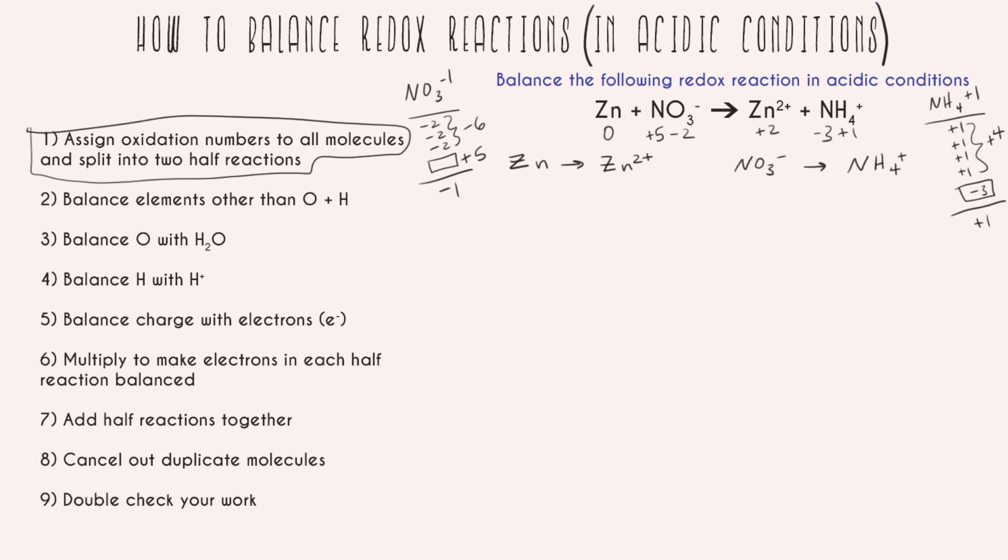So the two transitions we want to look out for are zero to plus two. That got more positive, that's oxidation. And plus five to negative three. That got more negative, that's reduction. So starting out our two half reactions are this and this.